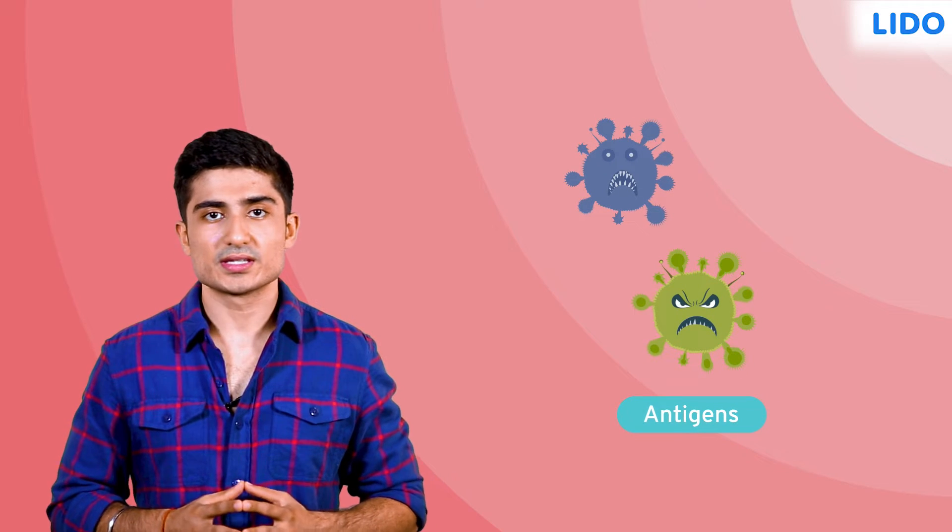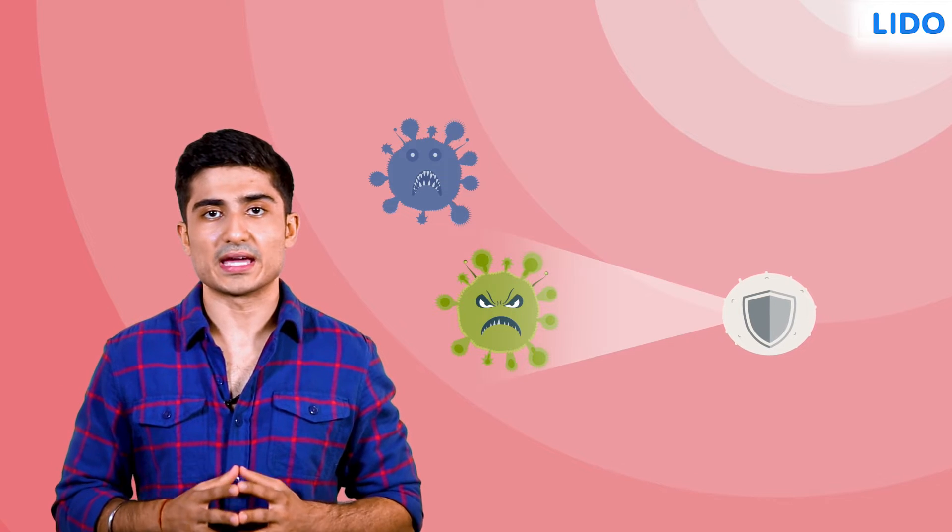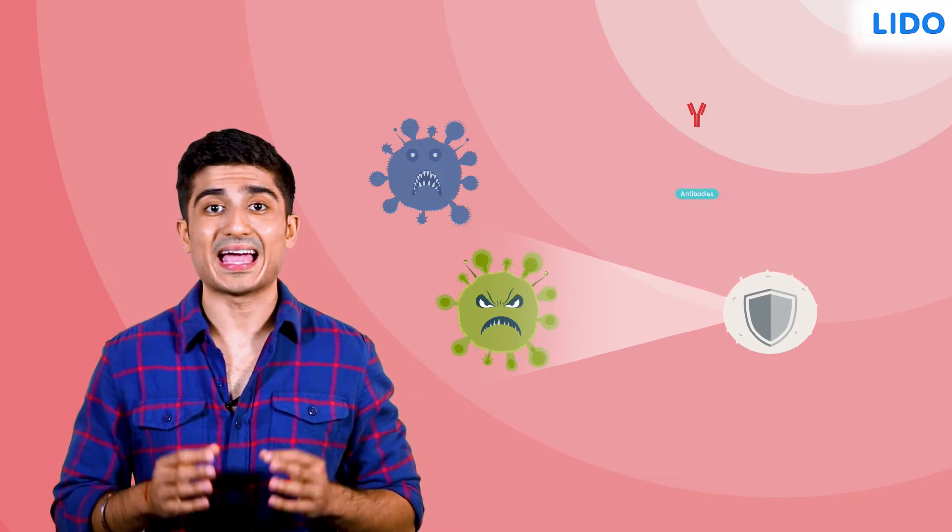After birth, we can acquire immunity naturally when we fall ill due to infections caused by germs, also known as antigens. Our immune system identifies antigens as foreign organisms and reacts by making proteins called antibodies.